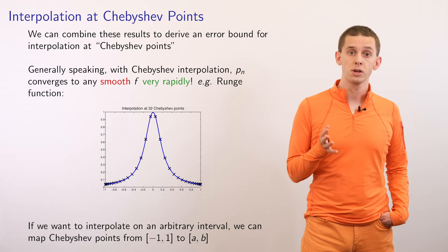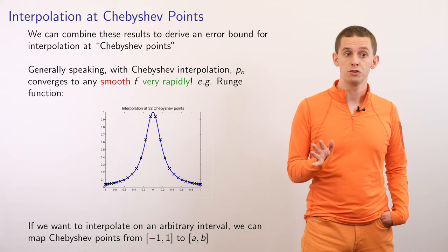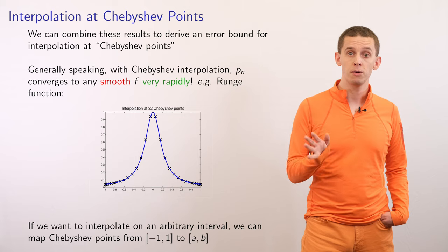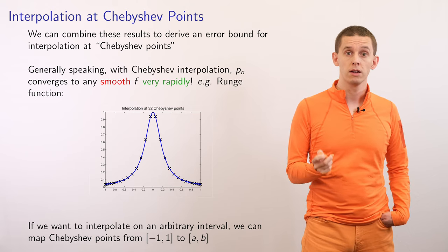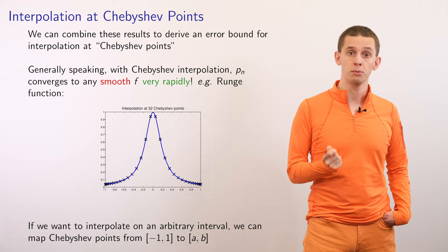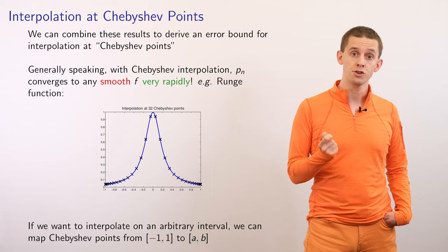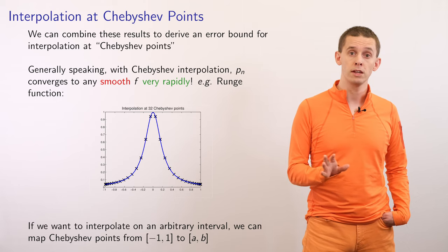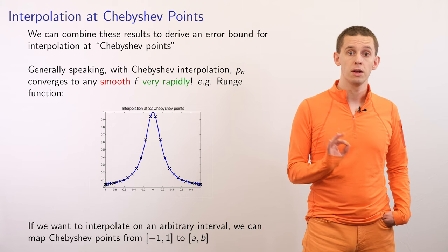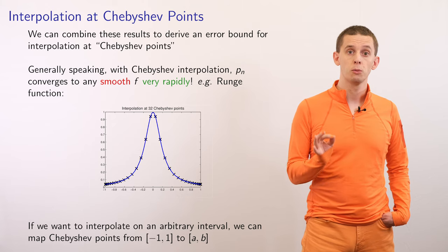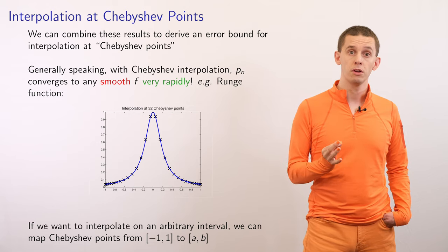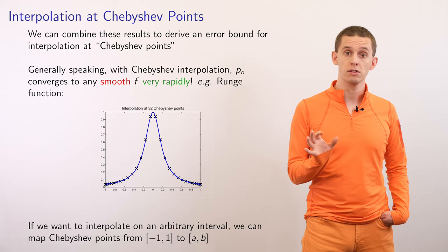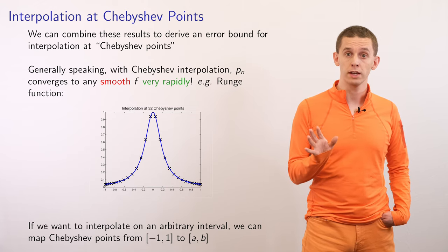Generally, with Chebyshev interpolation, pn converges to any smooth function f very rapidly. Revisiting the Runge function using Chebyshev points, the result is much better and nearly indistinguishable from the original function. The Chebyshev points are clustered toward the ends of the interval [−1, 1]. Previously with equally spaced points, polynomial interpolants had large oscillations at the ends; by using Chebyshev points clustered at the ends, those oscillations are controlled.